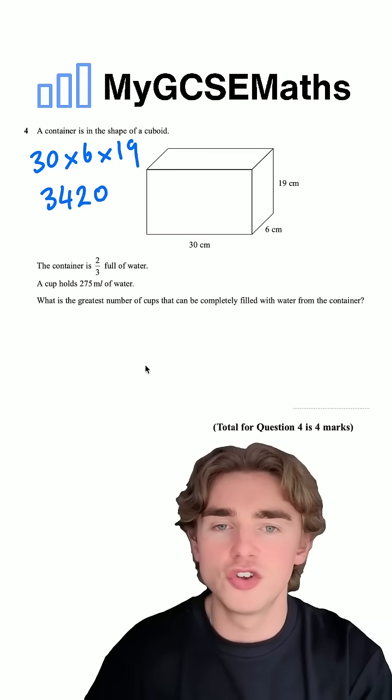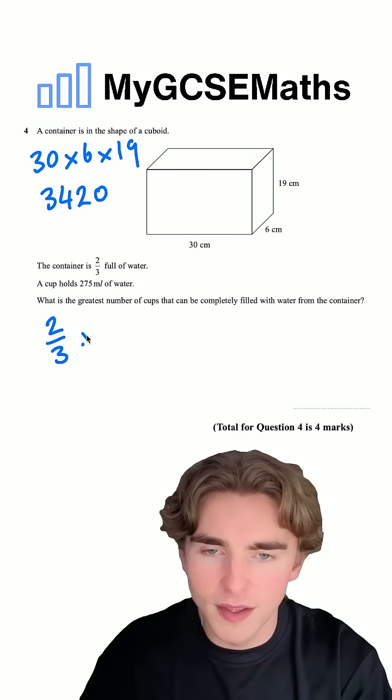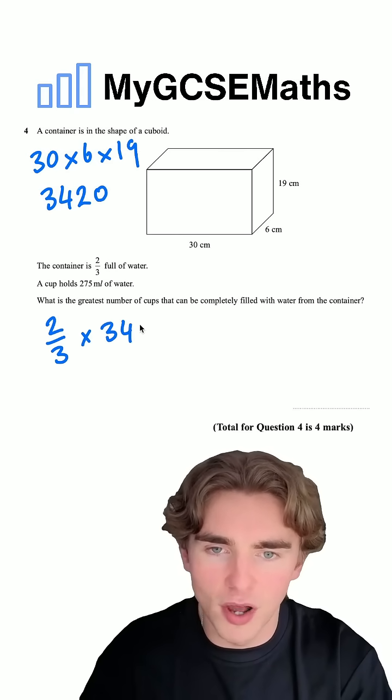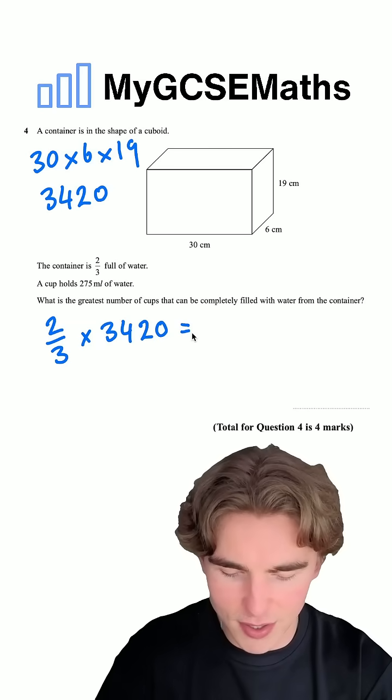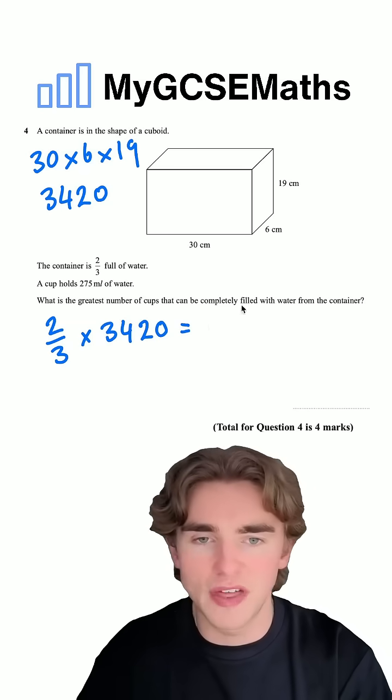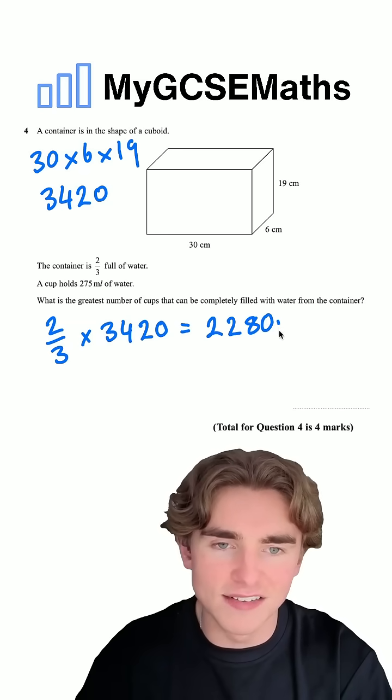Next, we're going to find two thirds of that. So I'm going to do two over three times by 3,420. Typing that into the calculator, two over three times 3,420, that is going to give us 2,280 milliliters.